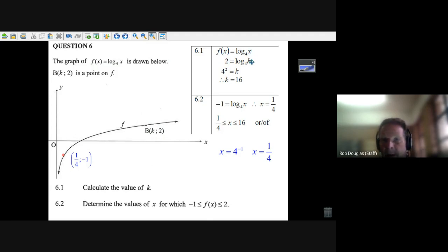If you know how a log equation works, that's the base and the log itself. Two is an exponent, so four squared equals this k here. So k is four times four, which is sixteen. First question is pretty easy.